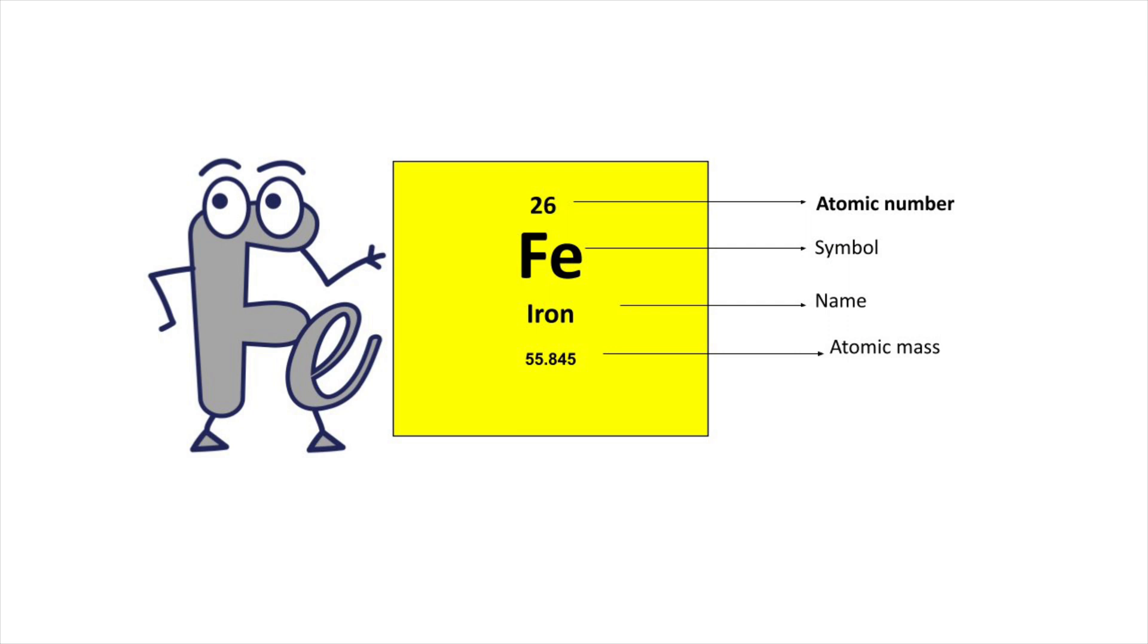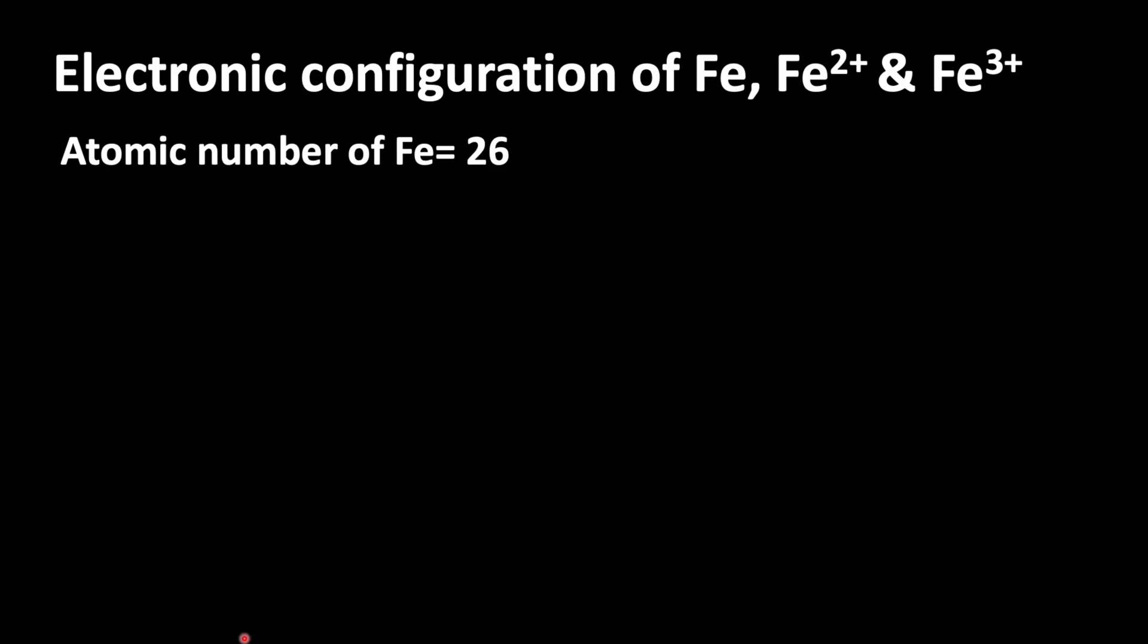To write electronic configuration we should know the atomic number. Iron's atomic number is 26. From that we can write the electronic configuration.